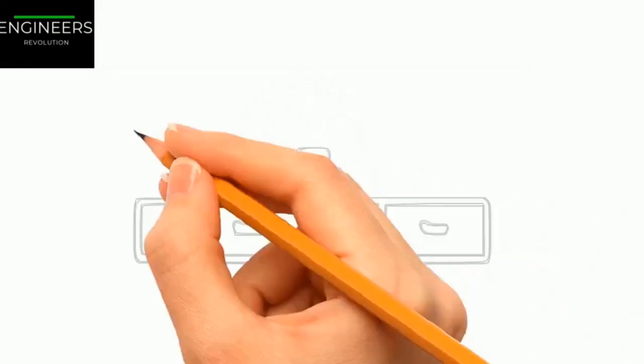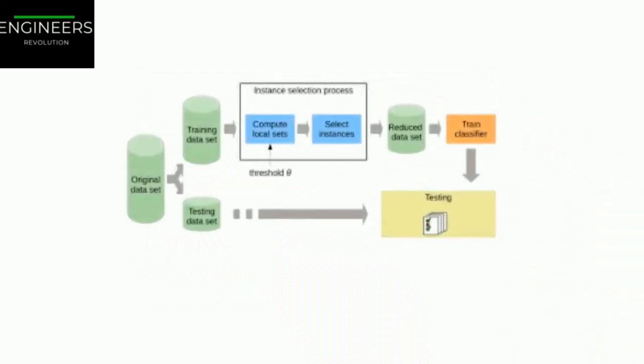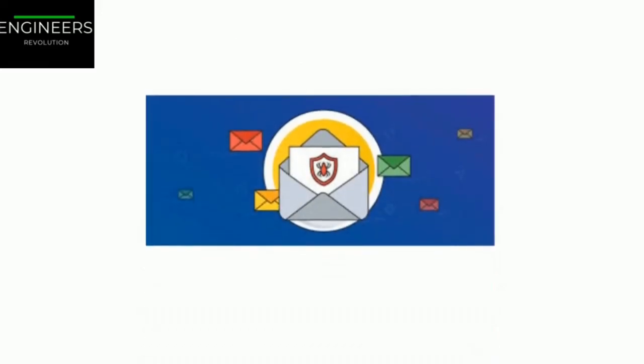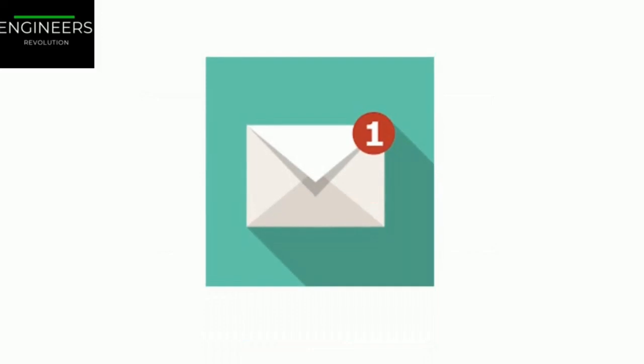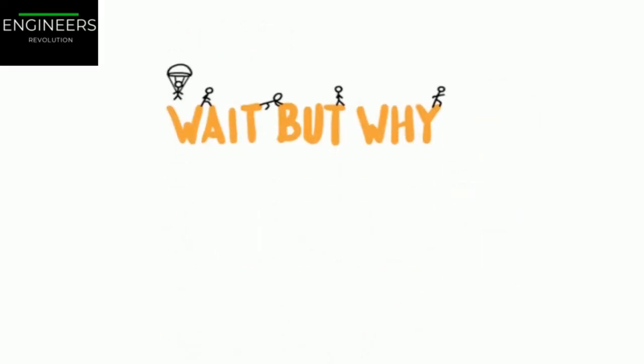The examples that the system uses to learn are called training sets. Each training example is called a training instance. In this case, the task T is to flag spam for new emails, the experience E is the training data, and the performance measure P needs to be defined. For example, we can use the ratio of correctly classified emails as performance. This particular performance measure is called accuracy and it is often used.